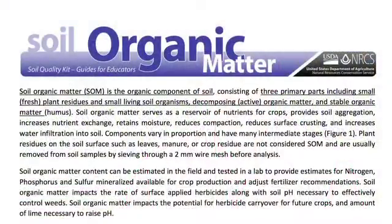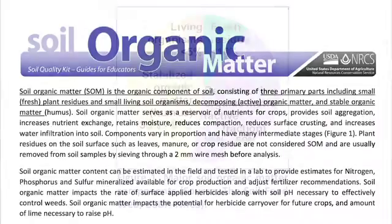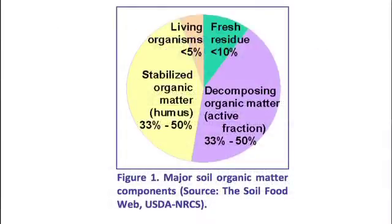Soil organic matter is the next test we'll be covering. Soil organic matter is the organic component of soil, and in your guide you'll see figure one that shows the different components: the decomposing or active organic matter, the stable organic matter or humus that gives soil its dark or black color, small living organisms such as microbes in the soil, and fresh residue which has just begun to break down.